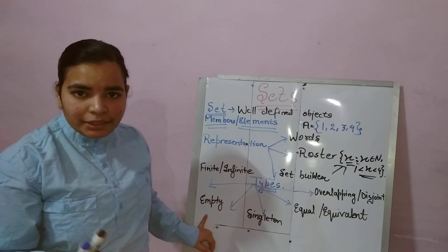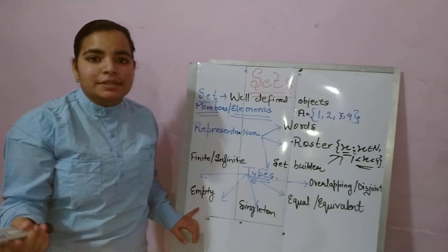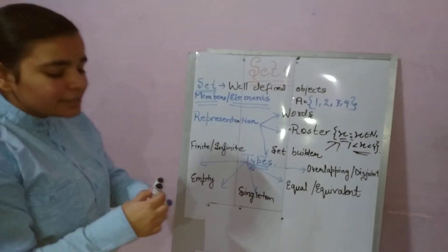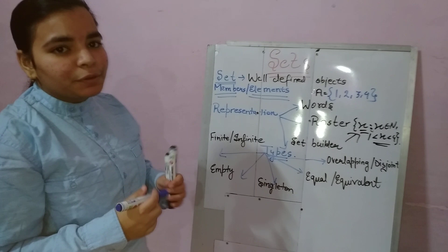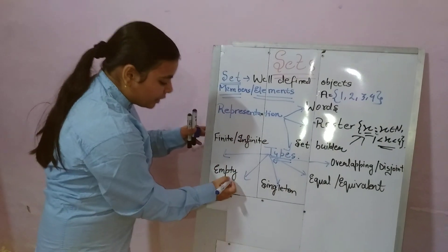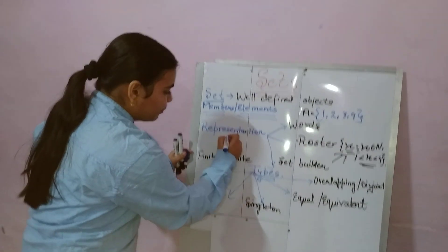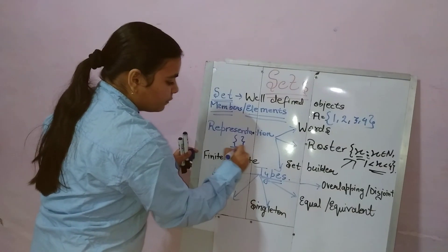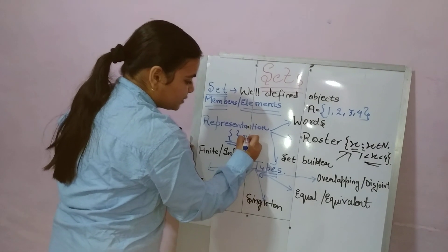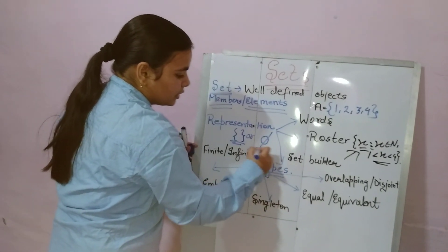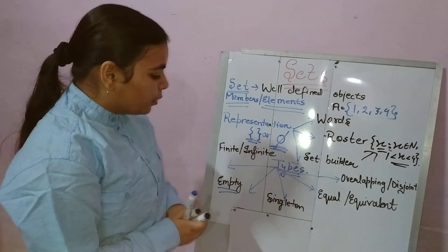The second type is an empty set, also known as a null set, which has got no elements in it. The representation of an empty set is important because at times we make mistakes. When it is an empty set, we represent it simply by putting curly braces with no element inside, or we can represent it with the phi sign. This is how you represent it.